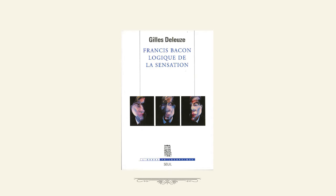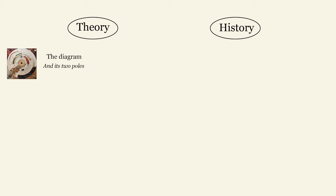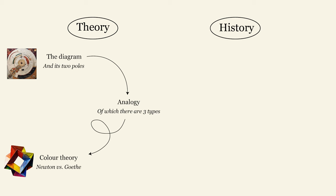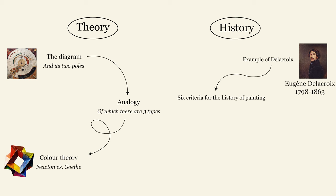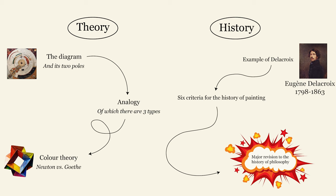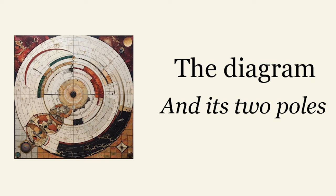Because he approaches the problem of painting from two angles — theory and history — we are first going to look at the theory. We'll see how Deleuze develops two main concepts, namely the diagram and analogy, and how from there he formulates a theory of colors which will allow him to define the regimes of colors that form the basis of time in painting. In the next video, we will delve into the history of painting. We will also see how he concludes his research with a major revision regarding the history of philosophy itself, following his study of painting. Let us begin with the first concept: the diagram, which is central not just in the context of painting but also for the whole of his philosophy.